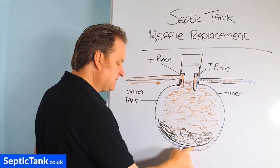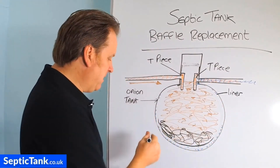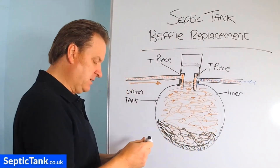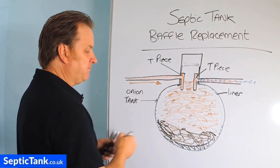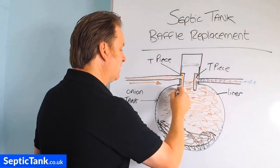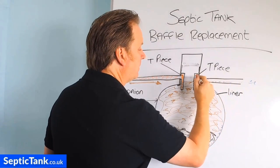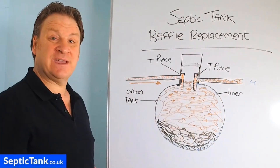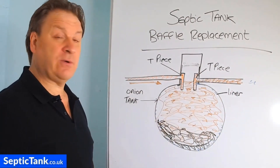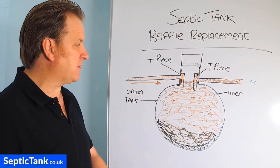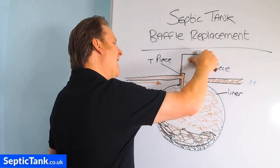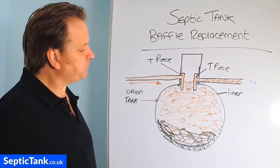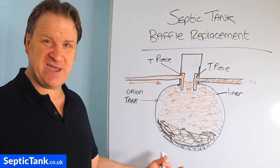What happens then is there's nothing to divide off the solids, fat, and grease from the wastewater. So instead of clean wastewater leaving the septic tank and going down into the soak away, you've got all the fat, grease, and sludge leaving the tank and making their way into the soak away, which in a year or two will completely block it up. That's how the septic tank baffle works — or should work, unless it breaks.